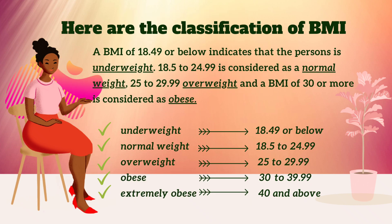How do we classify the BMI? Here are the classifications of BMI. A BMI of 18.49 or below indicates that a person is underweight. 18.5 to 24.99 is considered normal weight. 25 to 29.99 is overweight. And a BMI of 30 or more is considered obese.